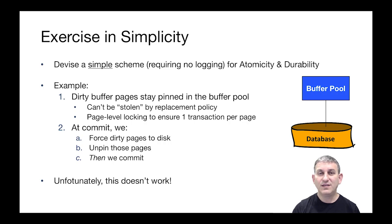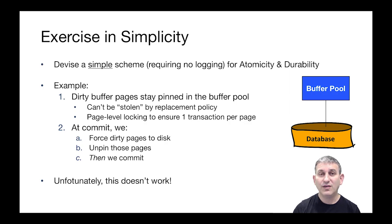Here's my simple scheme — a pretty natural one. The first rule is that dirty buffer pages are going to stay pinned in the buffer pool. We're not going to write anything to the database while the transaction is running; we'll prevent the replacement policy from stealing these pages by pinning them. We'll use page-level locking so there's one transaction per page — a transaction locks a page and also pins it in the buffer pool, giving it total control. No dirty writes go to the database, so we won't have corrupted data from incomplete transactions.